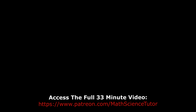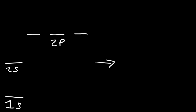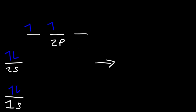Let's draw an energy diagram for a free carbon atom. We have the 1s level, the 2s level, and the 2p sublevel. There are two electrons in the 1s level, two in the 2s, and two in the 2p sublevel. This is the ground state electron configuration for carbon. In the excited state, an electron could jump into an empty orbital if given energy, but we'll focus on the ground state.